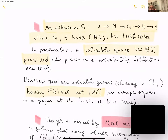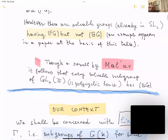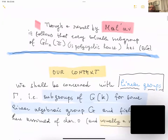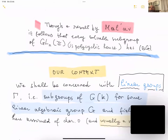In particular, a solvable group has bounded generation provided all pieces in the solvability filtration are finitely generated. However, there are solvable groups, already inside SL(2), which are finitely generated but not boundedly generated — we give an example in one of the papers. By a result of Milchev, every solvable subgroup of GL(m,ℤ) has bounded generation, so in the context of GL(m,ℤ) solvability suffices.